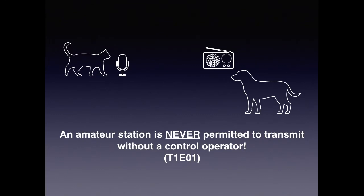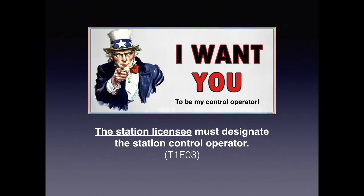An amateur station is never permitted to transmit without a control operator. That includes if you leave your equipment on and your pet accidentally keys your transmitter — you cannot designate them as a control operator. You have to designate somebody that has a license themselves to be the responsible party. Another test question: the station licensee must designate the station control operator.